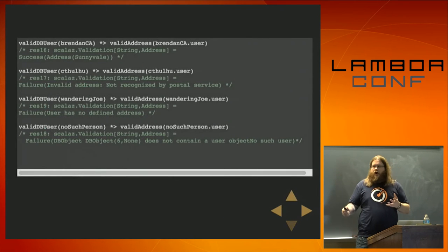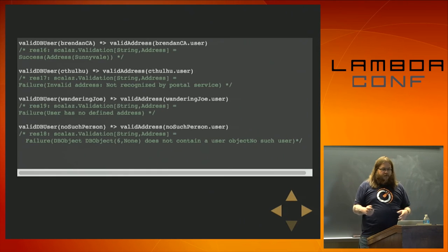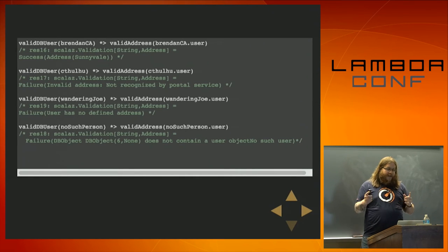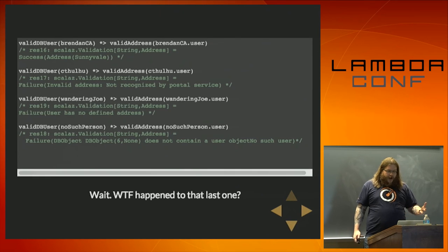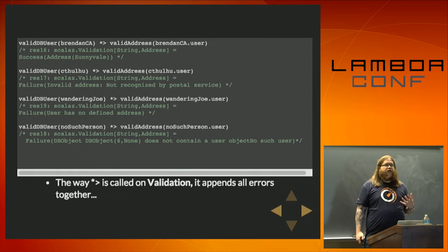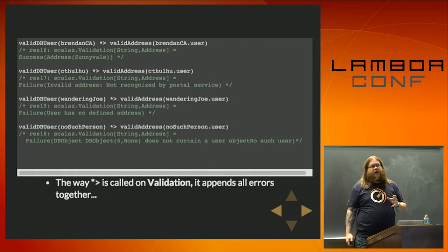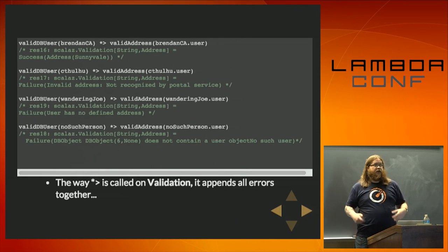Validation will chain all of the errors together instead of short-circuiting. For the last entry — valid DB user no such person combined with valid address no such person — I get one big combined error message: both 'DB object does not contain a user object' and 'no such user'. The way star-greater-than is called on Validation, it appends all the errors together. Each object is capable of defining its behavior when there are multiple errors, and Validation says: glob all the sides together into one thing.